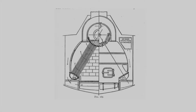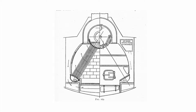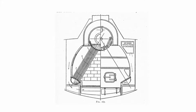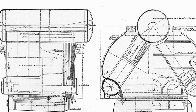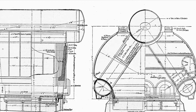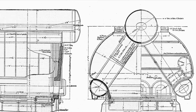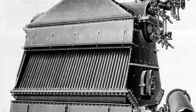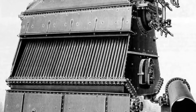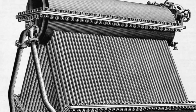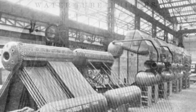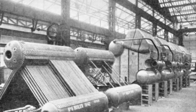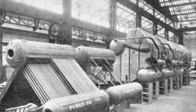Yarrow Boiler: The Yarrow boiler was developed by Yarrow and Company from London and widely used on ships, especially warships during World War II. Its compact size made it possible to use as a portable power generation unit that could be transported during the war. At that time, the boiler, turbine, condenser, and other auxiliary equipment were installed in railway wagons.